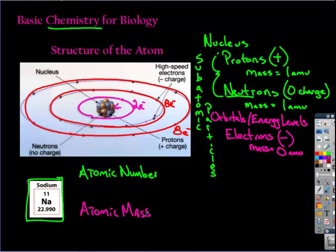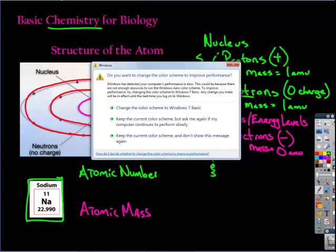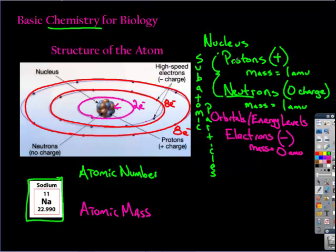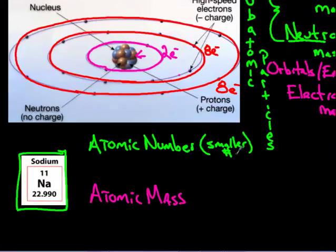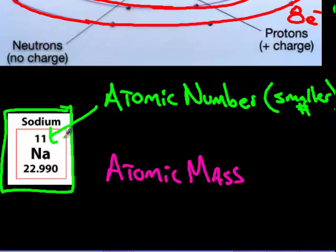So you're faced with a decision—you have to decide which one is which. Which of these is the atomic number and which is the atomic mass? I will tell you the atomic number is always the smaller number.